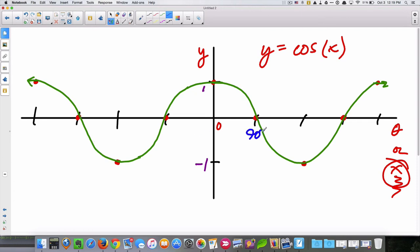90 degrees, 90 degrees, 180 degrees, 270 degrees, 360, and so on. This is negative 90, negative 180, negative 270, and negative 360. Okay?